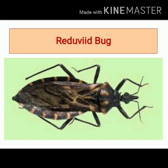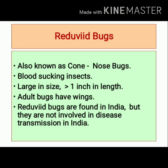This is an image of a Reduviid bug. These bugs are also known as cone nose bugs. They are blood-sucking insects and are larger in size, with a length of more than one inch. Adult Reduviid bugs have wings.